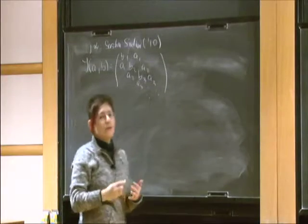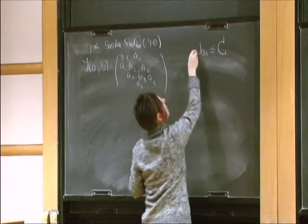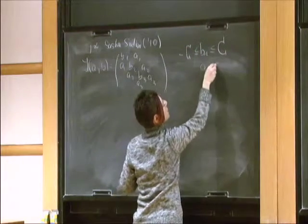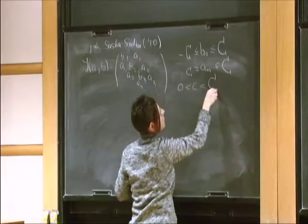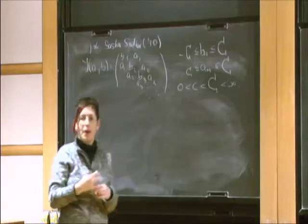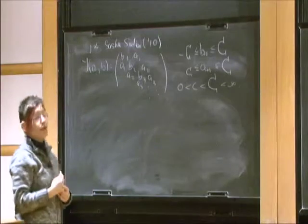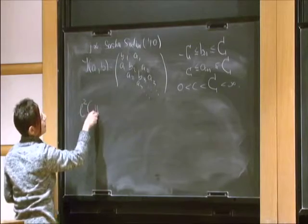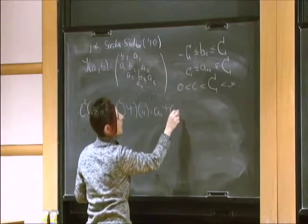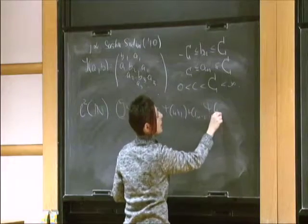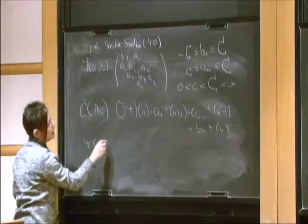We assume that B and A are bounded real sequences: B_n is between −C and C, and A_n between a small c and capital C, where small c is strictly greater than zero, strictly smaller than capital C, strictly smaller than infinity. In this case it defines a bounded self-adjoint operator on ℓ²(ℕ), defined by J ψ(n) = A_n ψ(n+1) + A_{n−1} ψ(n−1) + B_n ψ(n), where formally A_0 ψ(0) = 0.